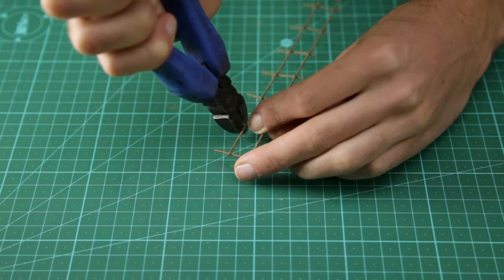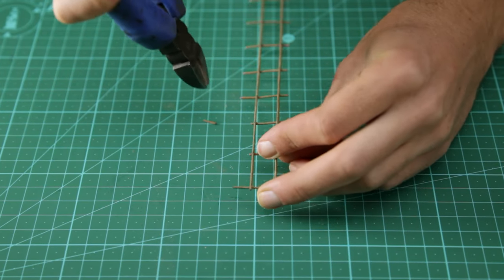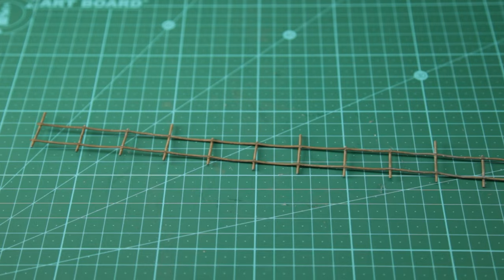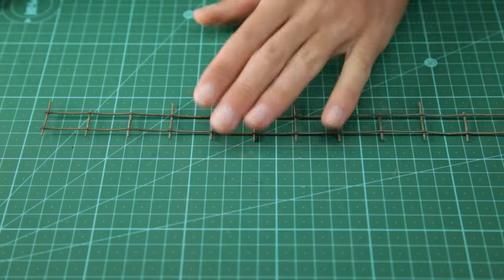Then I cut off some of the pins to make it easier to install the fence once it's done. Just so you don't have to drill 500 holes to install it. Then before I start gluing I make sure the wire is nice and clean.